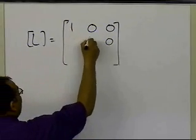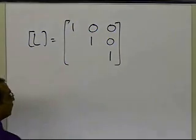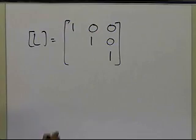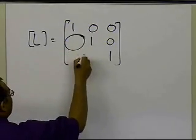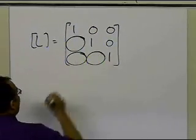You're going to put ones in the diagonal, like this, 1, 1, 1, and then in order to be able to fill this in, and this in, and this in, we have already established what those are.